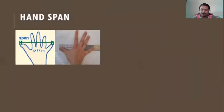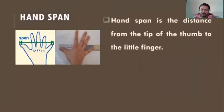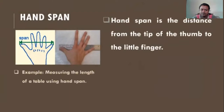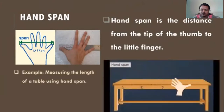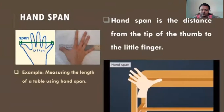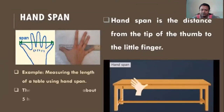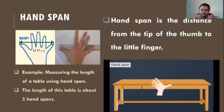Hand span is the distance from the tip of the thumb to the little finger. For example, let us measure the length of a table using hand span. So we are going to measure the length using hand span. The length of this table is about five hand spans.